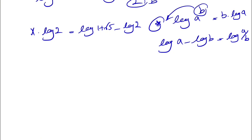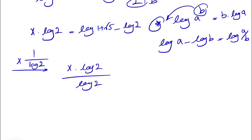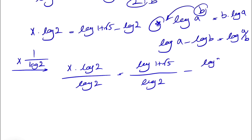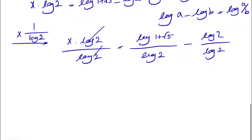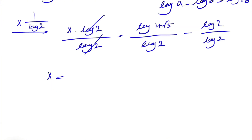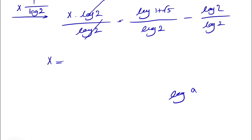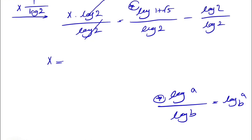We now see log 2 on both sides, so we divide through by log 2. On the left, x times log 2 divided by log 2 gives x. On the right, (log(1 plus the square root of 5) minus log 2) divided by log 2. Using the change-of-base identity, log(a) divided by log(b) equals log base b of a, the log 2 terms cancel and we get x equals log base 2 of (1 plus the square root of 5).